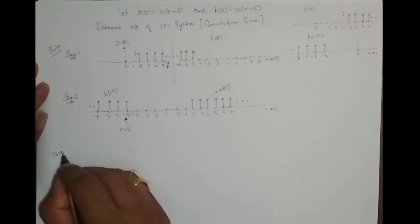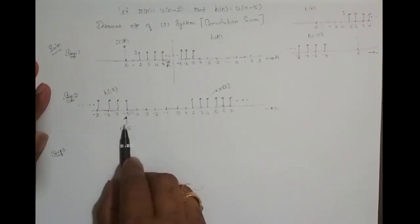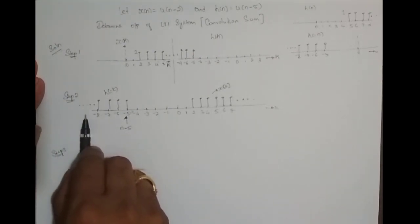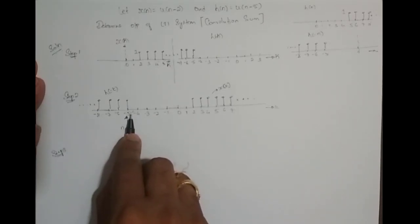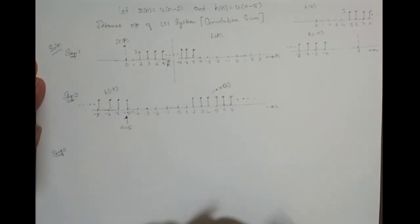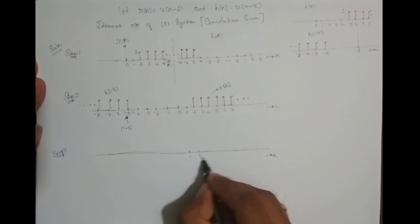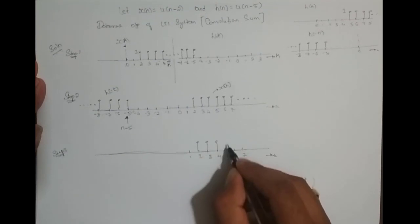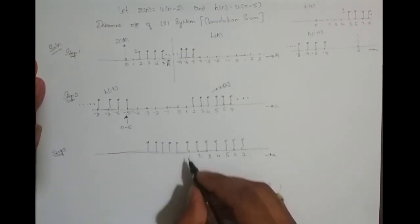Step 3: move this sequence starting from minus infinity to plus infinity. Assume n minus 5 starts from minus infinity and keeps coming right — minus 1000, minus 100, minus 10 — till minus 5. Until n minus 5 reaches 1, there is no overlap. So x of k starts at 2 and h of minus k starts at this slider position.